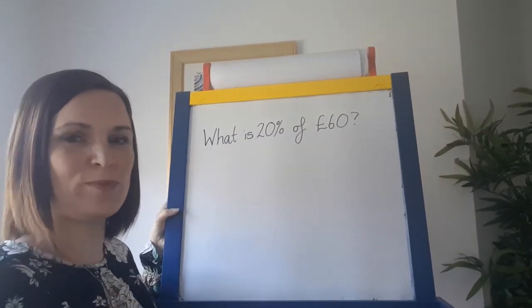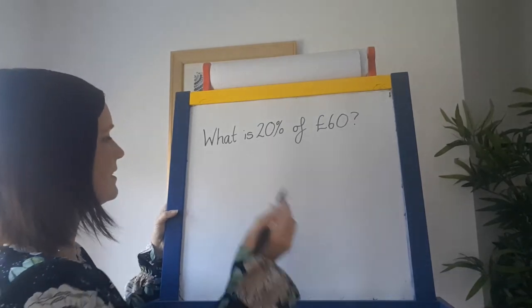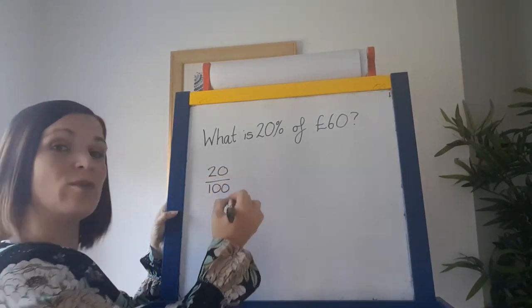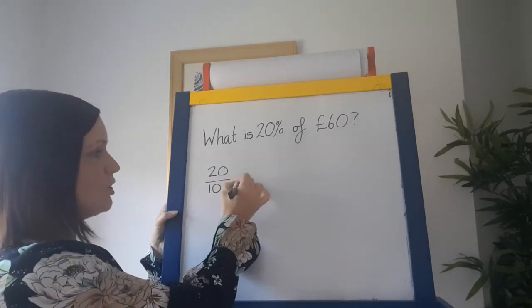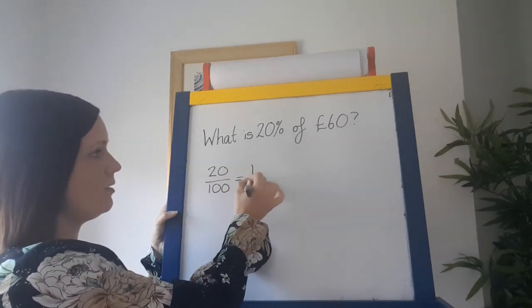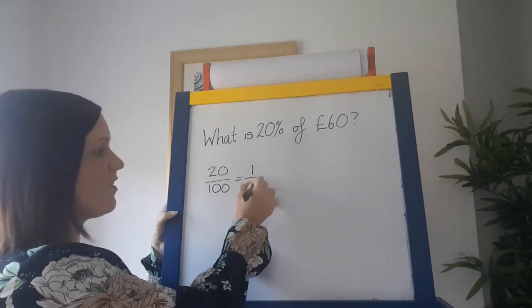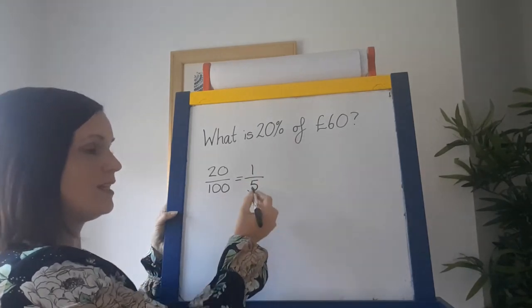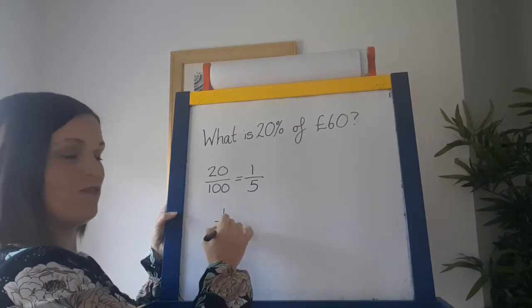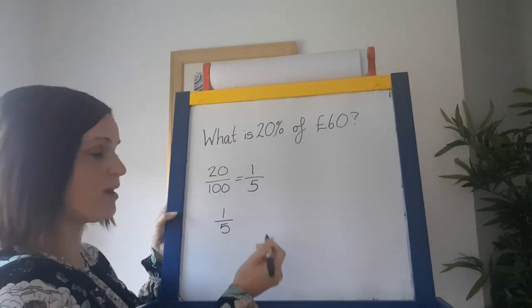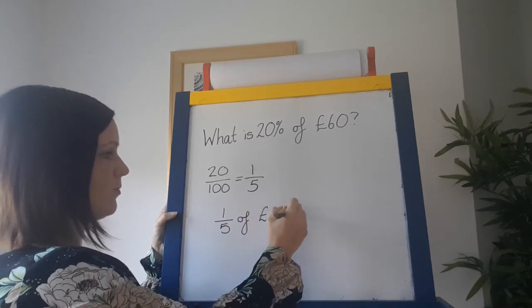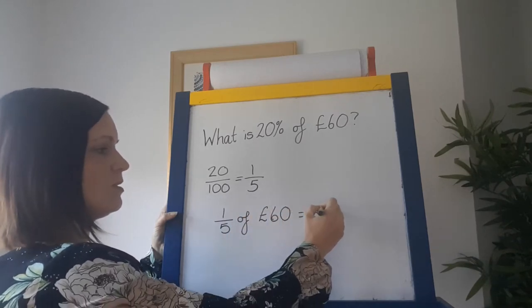Now we've been asked what 20% of £60 is. It's good to try and remember what these are: 20 divided by 20 is 1, and 100 divided by 20 is 5, so 20% is the same as one fifth. To find one fifth of something, you divide it by 5. One fifth of £60 equals £12.